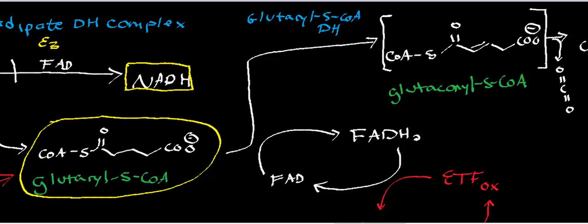What we're going to see is that this pathway is a pseudo form of beta-oxidation. Notice that glutaryl-S-CoA is very similar to an activated fatty acid — we have our coenzyme A and sort of a fatty acid chain, except the only problem is that it ends in a carboxylate. That's unlike what we've seen in normal beta-oxidation, but the pathway is actually very similar. The only difference between this and normal beta-oxidation is the first enzyme.